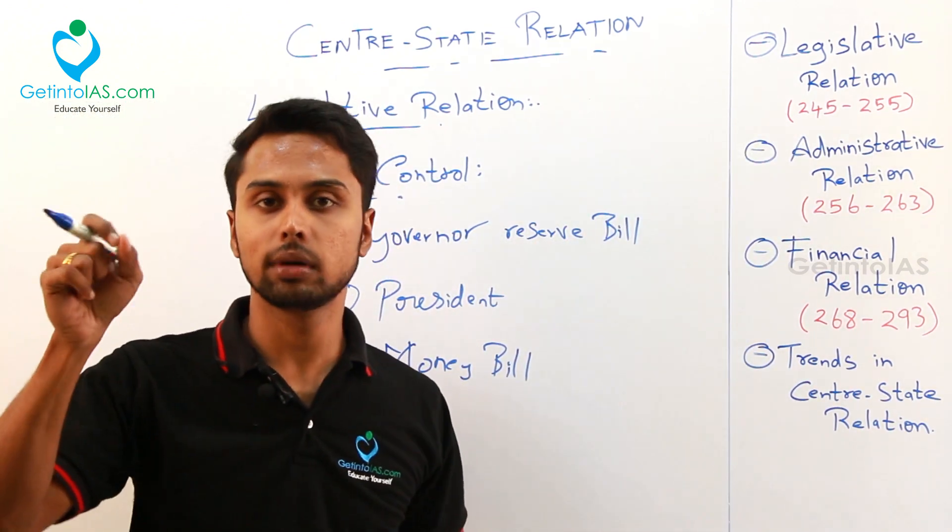The fourth occasion is to implement international agreements. If any international agreements have to be signed, your center can make laws on any state subject to that effect. So these are the special occasions where parliament can make laws on state subjects: first, when Rajya Sabha passes a resolution; second, when two or more states pass a resolution; third, during emergency; and fourth, to implement international agreements.